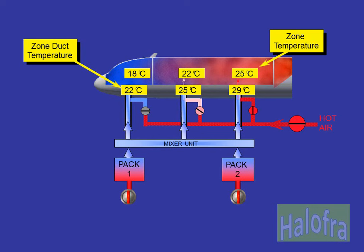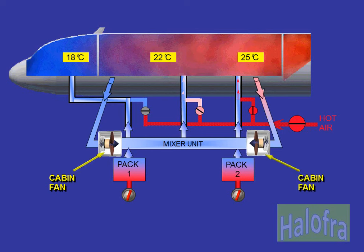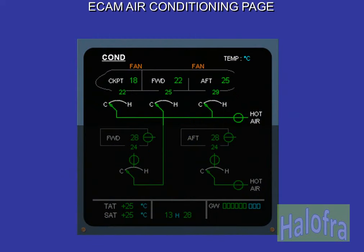Zone duct temperature, which is the temperature of the air entering a zone, and the actual zone temperature are monitored by the zone control computer, or ACSCs for the A318. Two cabin fans are fitted to reduce the bleed air requirement and therefore save fuel. These fans establish a recirculation flow of air from the cabin zones to the mixer unit. In normal operation, there are no ECAM indications associated with the cabin fans. The ECAM air conditioning page contains zone duct temperature, zone temperature, and trim air system indications.